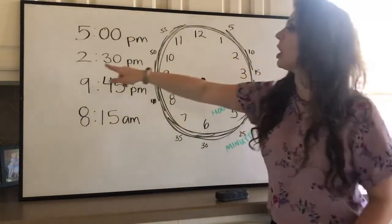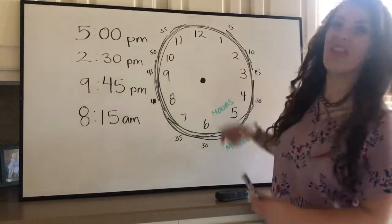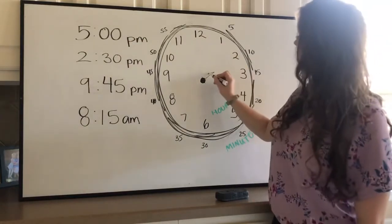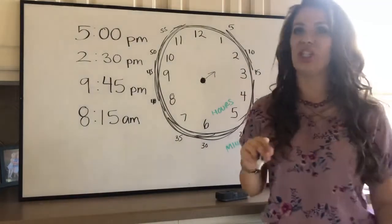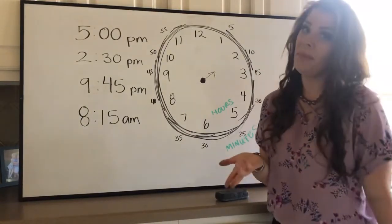So where would our two be on the clock for hours? Oh, there it is. So my small hand would point to the two. And where would my minute hand point? Well, let's skip count by fives.